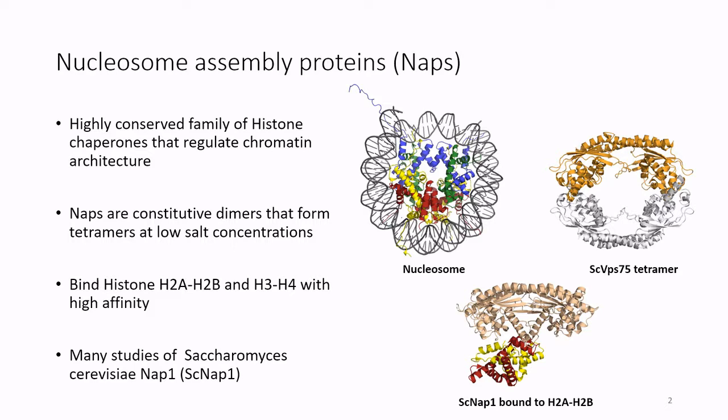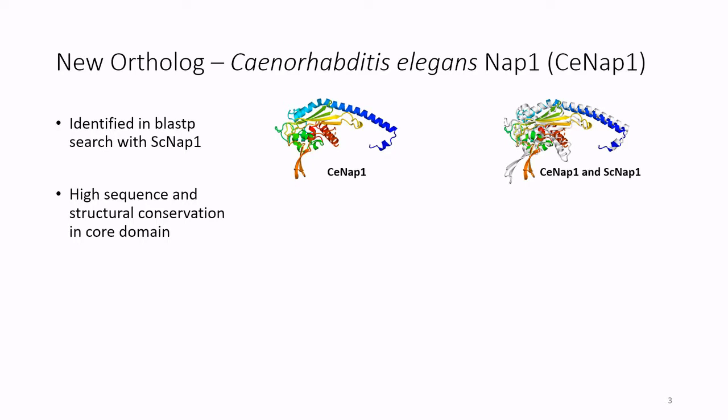We have recently identified a new NAP ortholog in the worm, which we will call WormNAP1. We identified WormNAP1 by doing a BLAST search with the yeast NAP1 sequence. Crystallographic analysis has shown that the high sequence similarity between worm and yeast NAP1 is mirrored in high structural conservation, at least in the core domain. Shown here is the crystal structure of WormNAP1, alongside a superposition of worm and yeast NAP1 structures showing their obvious structural similarity.